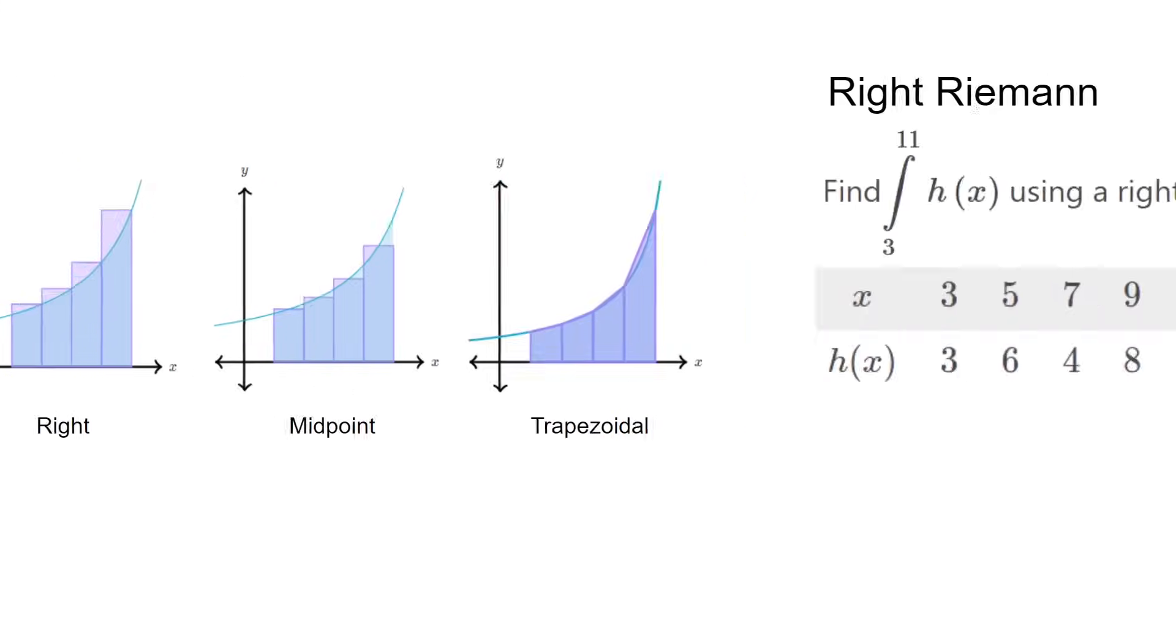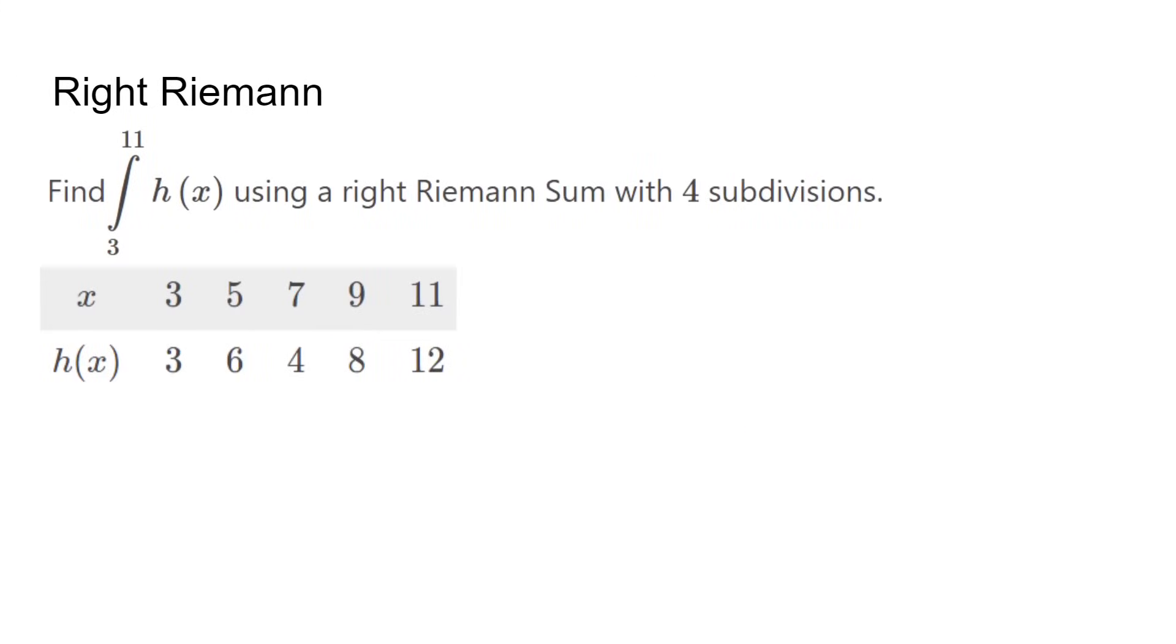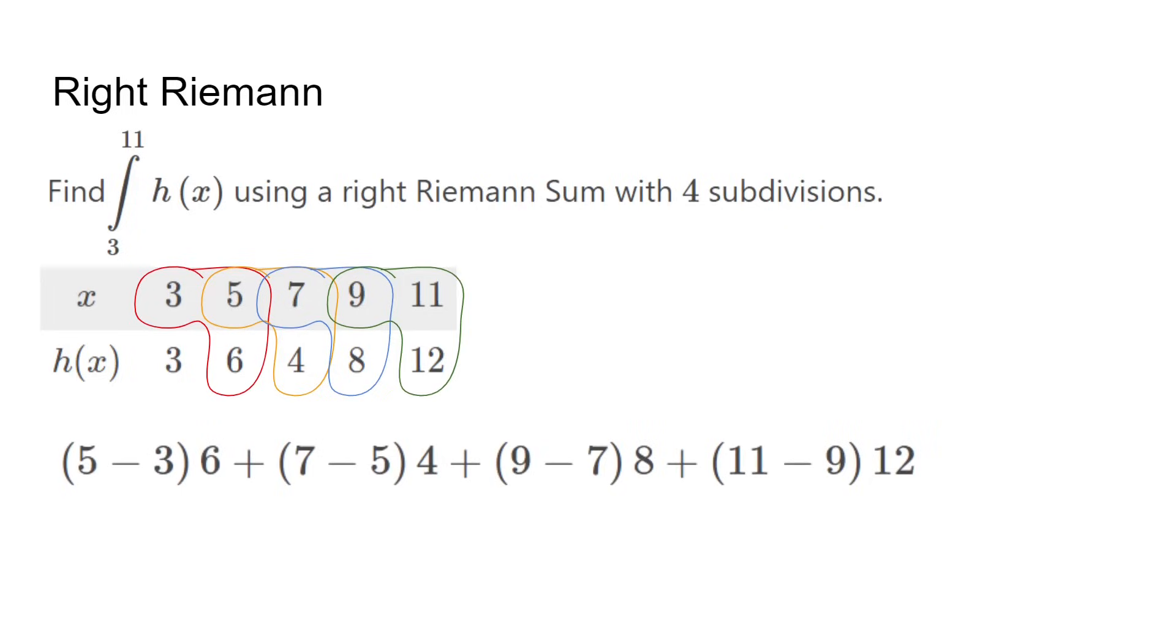Let's do an example of each type starting with the right Riemanns. We are told to use 4 subdivisions, so 5 points is the perfect amount. Since we know that the right side y value is always used, we can draw circles like these to represent the values that we will utilize. We also know it's a rectangle, so we just need to subtract the x values for width and multiply by the y value for height. Now, just add the numbers to get the estimated area under the curve.